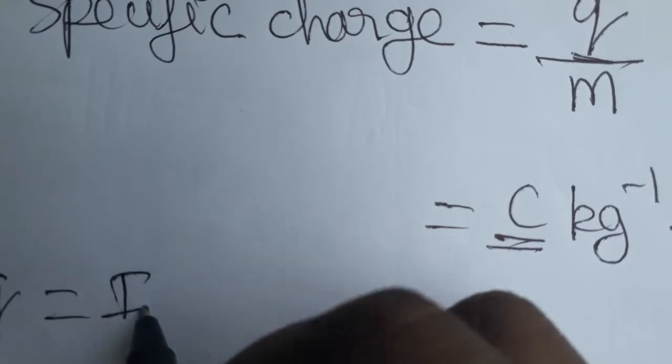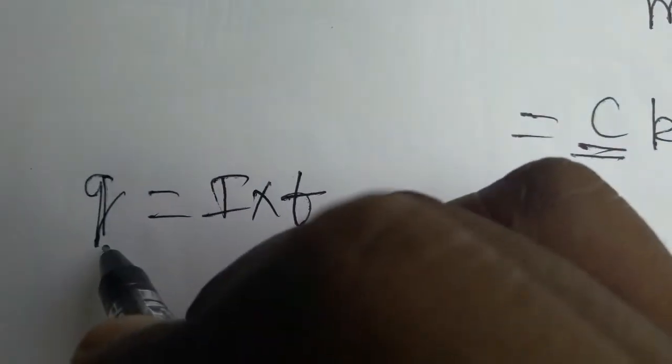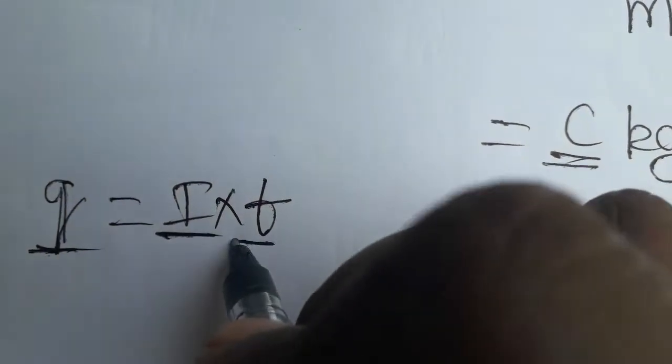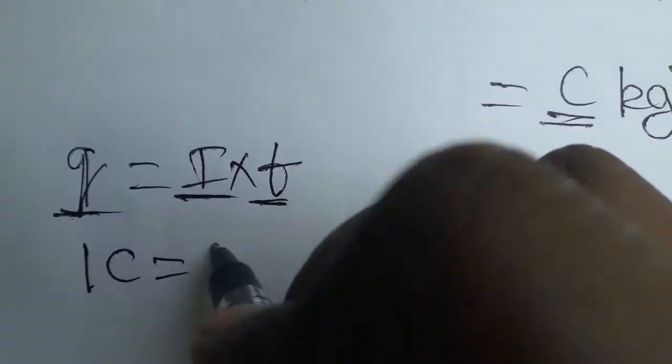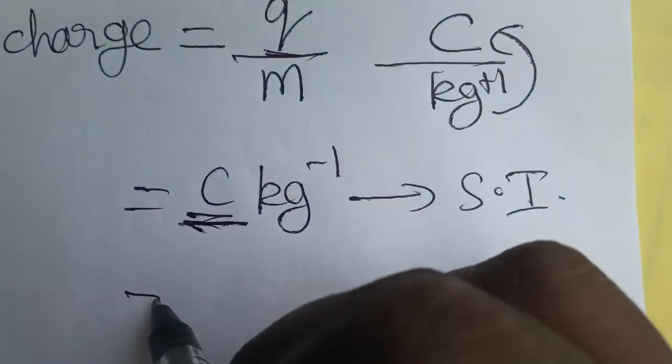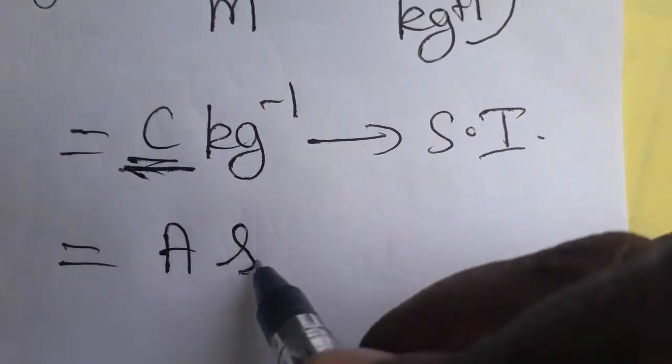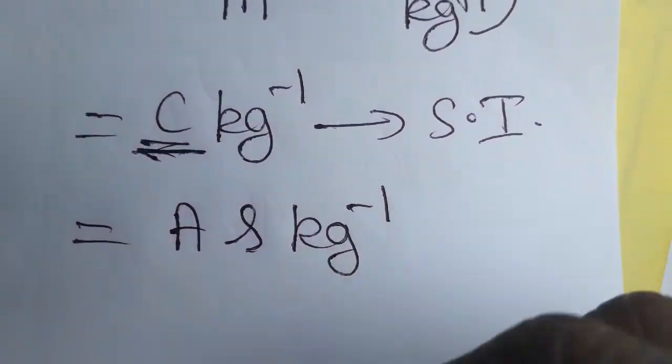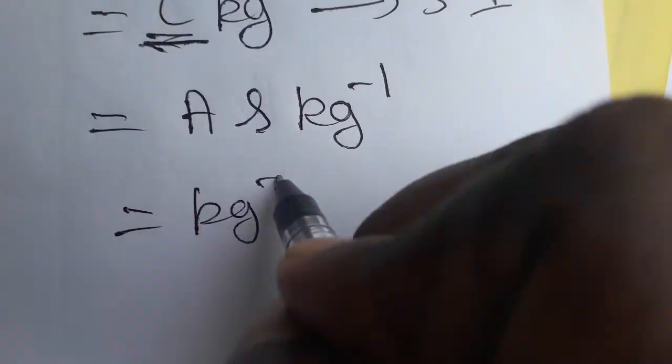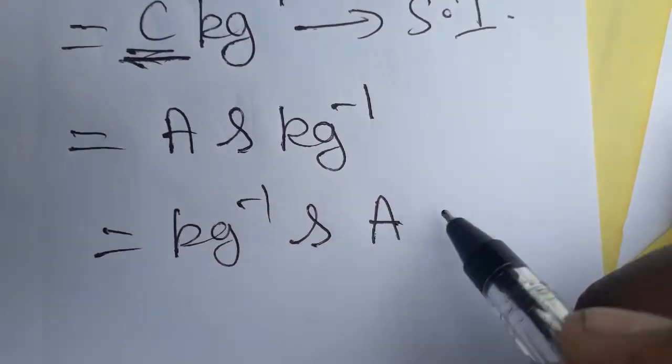Charge is equal to current into time, because current is charge by time. That means 1 coulomb is 1 ampere into 1 second. Instead of writing coulombs, you can write as ampere into second kg⁻¹, so it's kg⁻¹ second ampere.